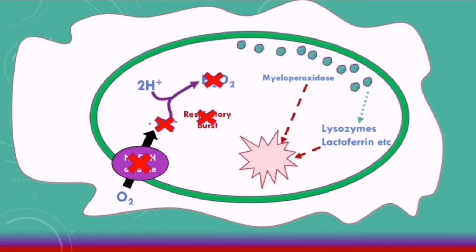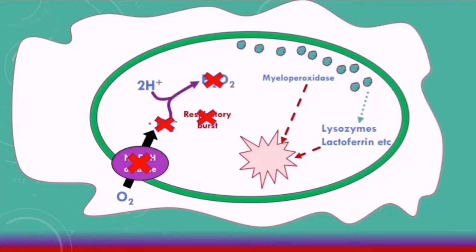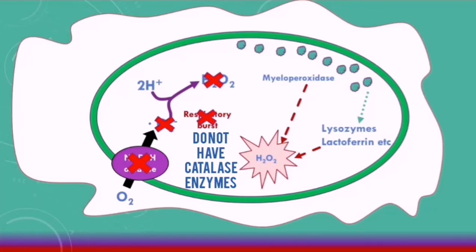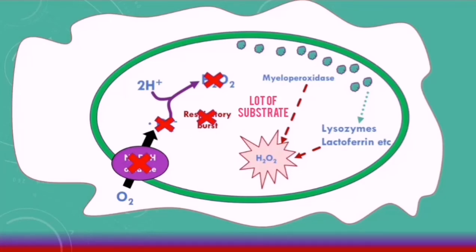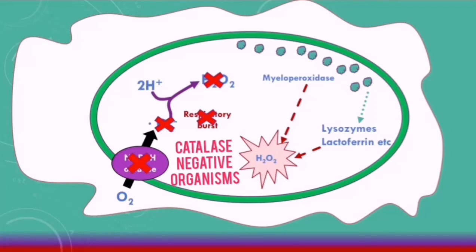The myeloperoxidase enzymes will still be working. If a patient is infected with a catalase negative organism and the phagocyte engulfs this pathogen, the pathogen will produce a lot of hydrogen peroxide as a waste product and does not have catalase enzymes to break it down. So the myeloperoxidase enzymes will have plenty of substrate and will be able to kill the pathogens. The phagocyte can still deal with catalase negative organisms despite the lack of a respiratory burst.